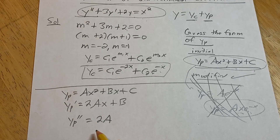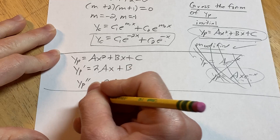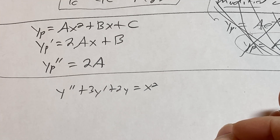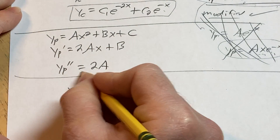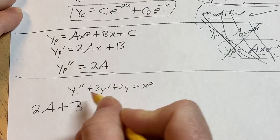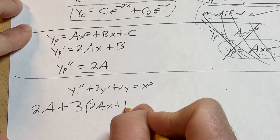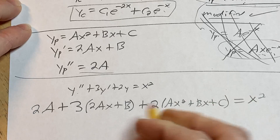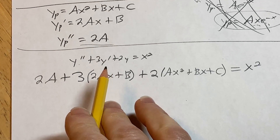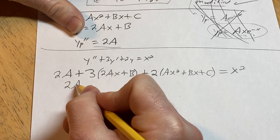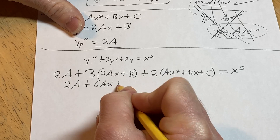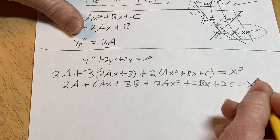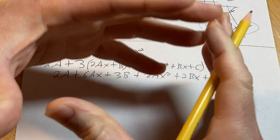Plugging into the DE — y double prime plus 3y prime plus 2y equals x squared — we substitute: 2a plus 3(2ax plus b) plus 2(ax squared plus bx plus c) equals x squared. Expanding: 2a plus 6ax plus 3b plus 2ax squared plus 2bx plus 2c equals x squared.